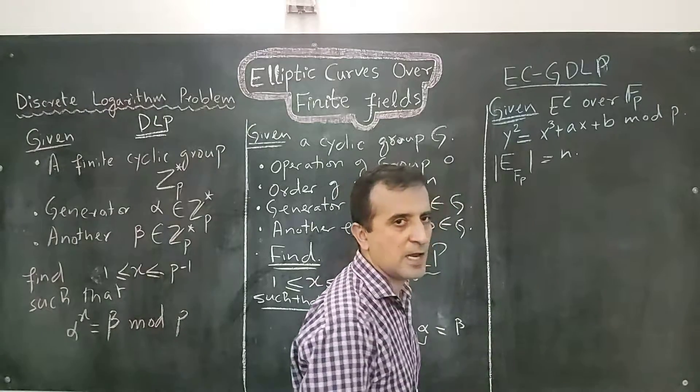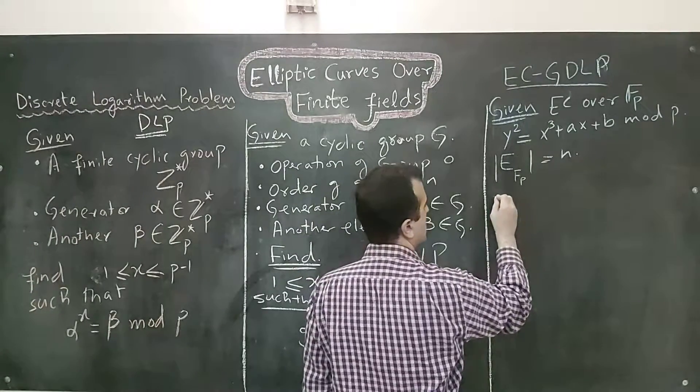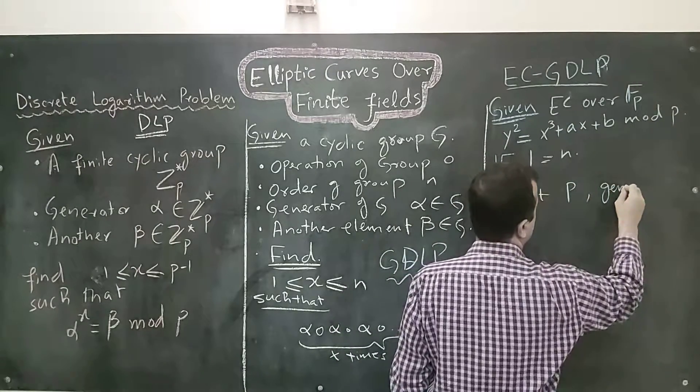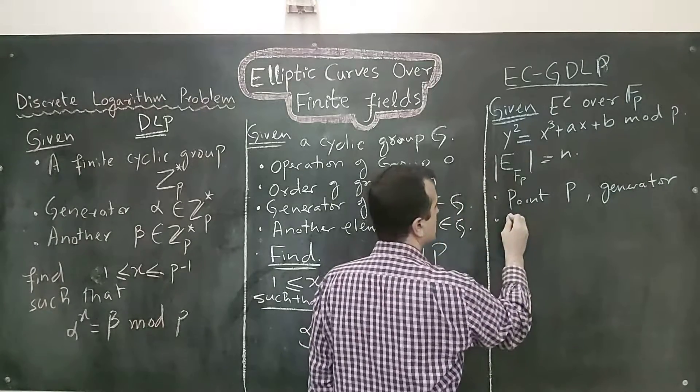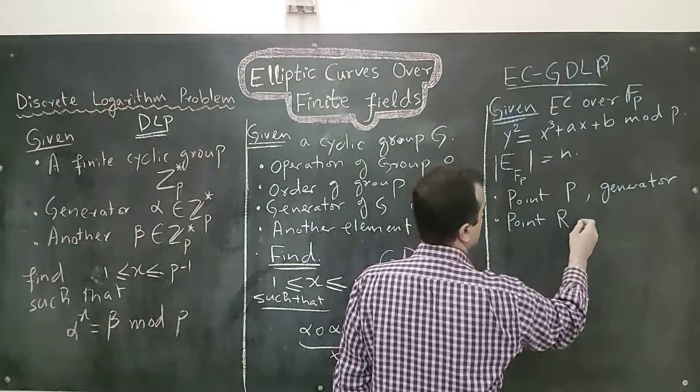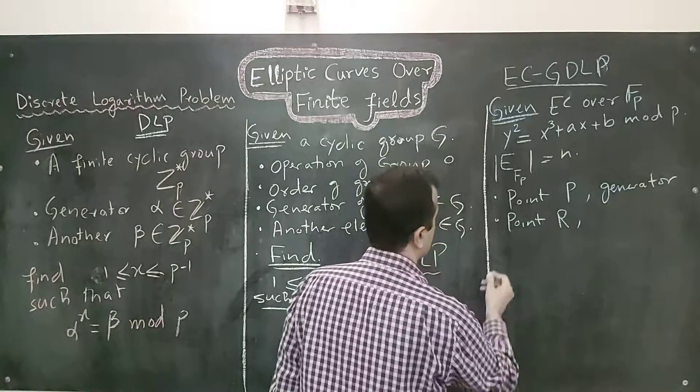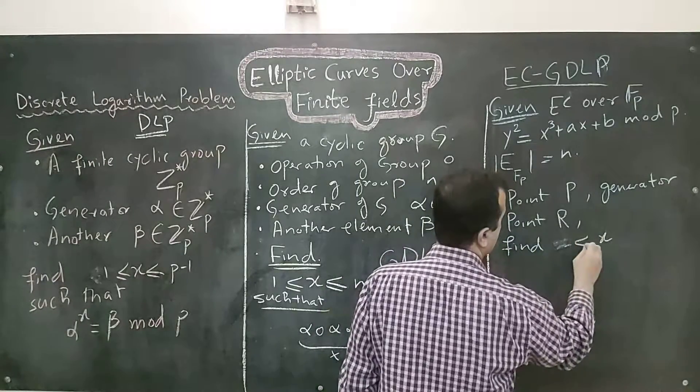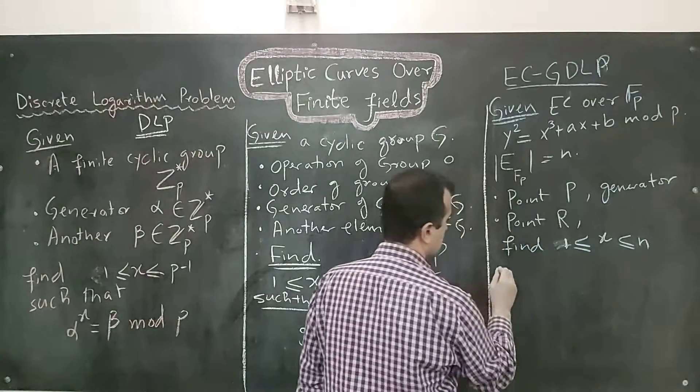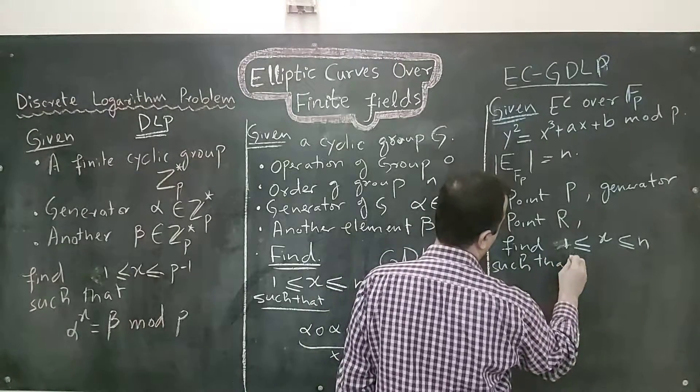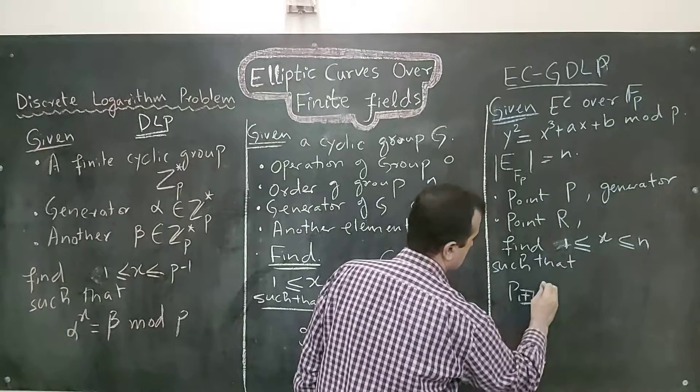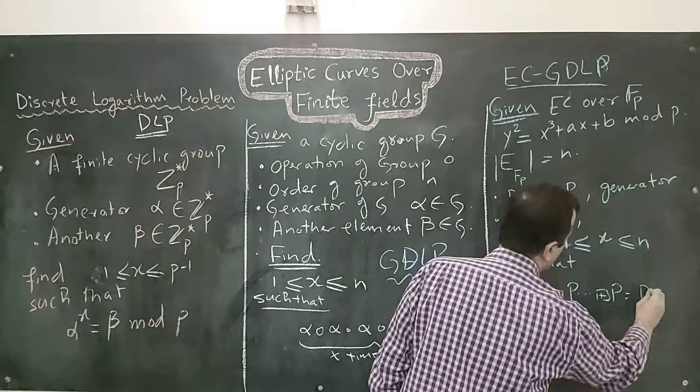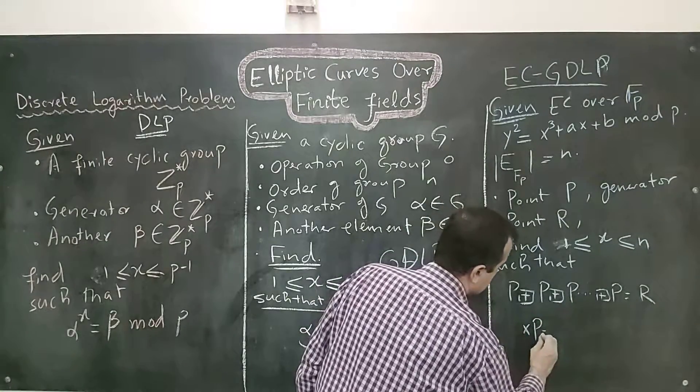We are given a point on elliptic curve. That point acts as a generator. So, basically, we have a point P which is a generator. Also, we are given another point R and R is a normal point. And we have to find x between 1 and n such that P plus P plus P x times equals to R. Or we can say that xP is equal to R.